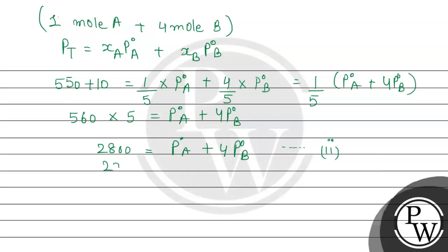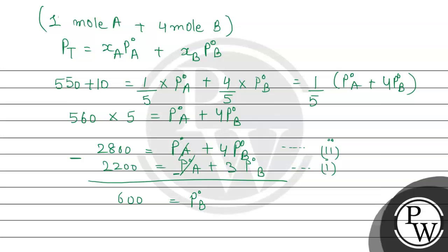Now we subtract the first equation from the second. First equation: 2200 = P°_A + 3 × P°_B. Second equation: 2800 = P°_A + 4 × P°_B. Subtracting: 2800 − 2200 = 600. The P°_A terms cancel, and 4 × P°_B − 3 × P°_B = P°_B. So P°_B = 600 mm of Hg.